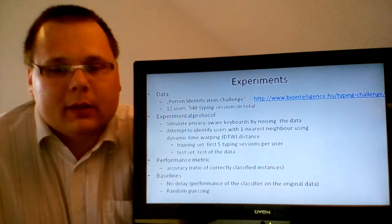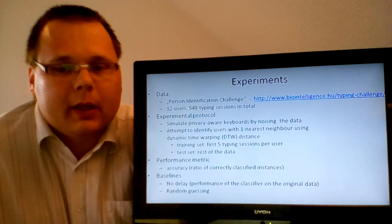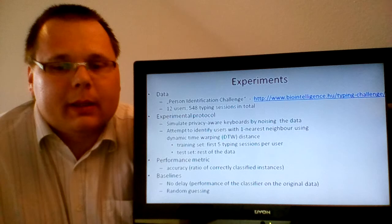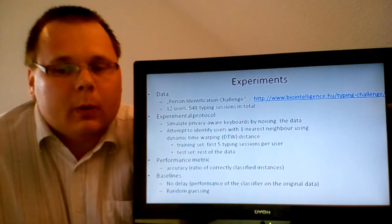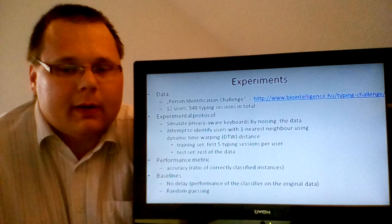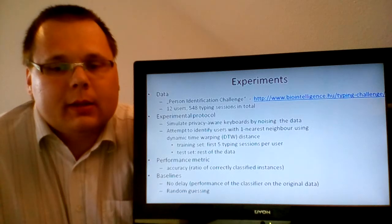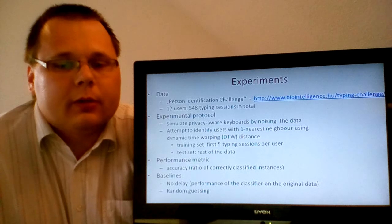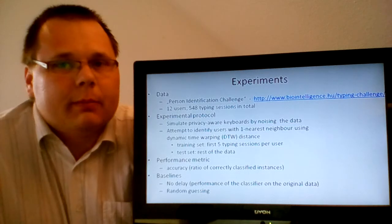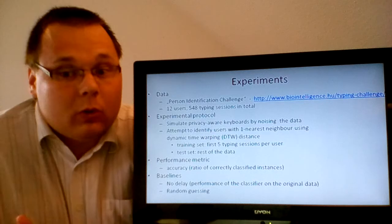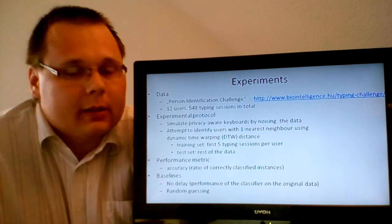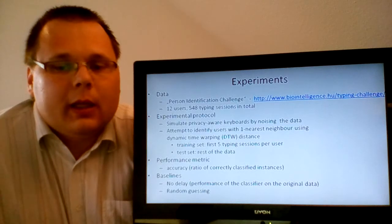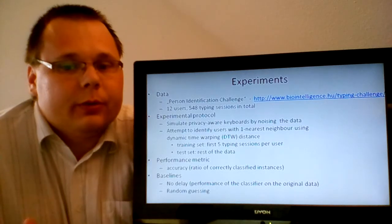Subsequently, we tried to identify users with a classifier. In particular, we used one nearest neighbor with dynamic time warping distance because it is one of the most popular time series classifiers and we consider keystroke dynamics data as time series of the duration of keystrokes, just like in the example at the beginning of the talk. Furthermore, this classifier, the one nearest neighbor classifier is easy to implement and due to these reasons, even an attacker is likely to use it.